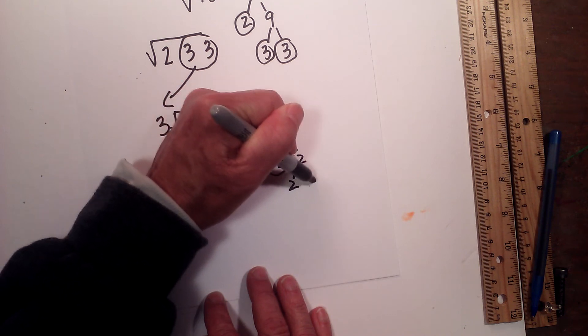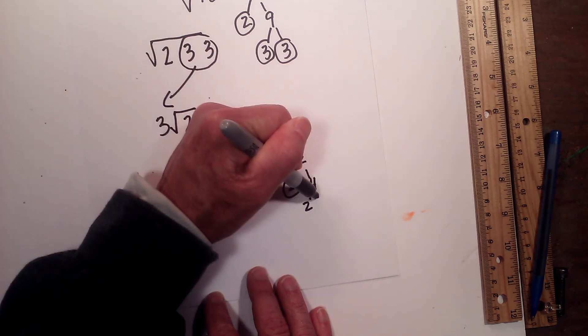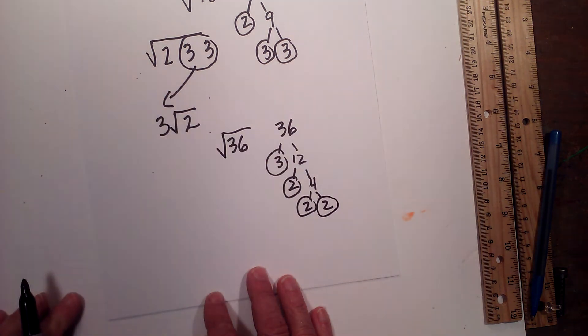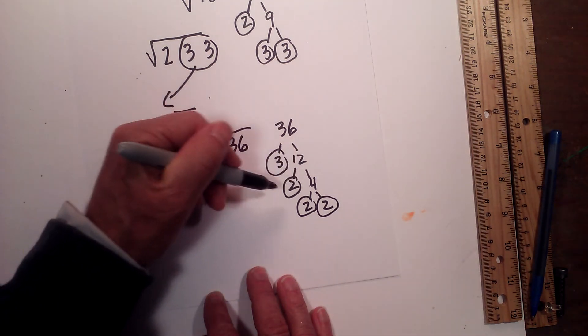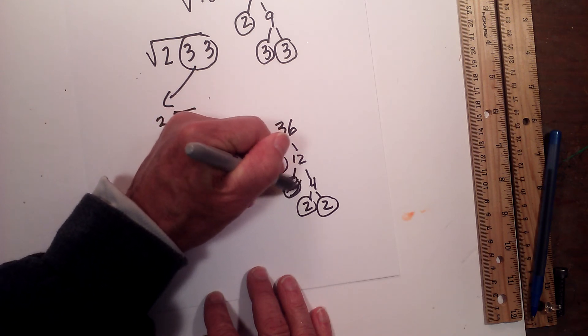Then we have 2 times 4, circle the 2, and then 2 times 2, circle the 2. Okay, and I think I made a mistake here. So we have 3 times 12, excuse me, this should be a 3 right here. So let me rewrite that, sorry.